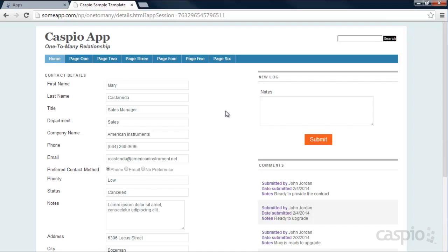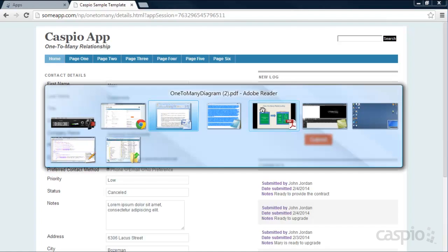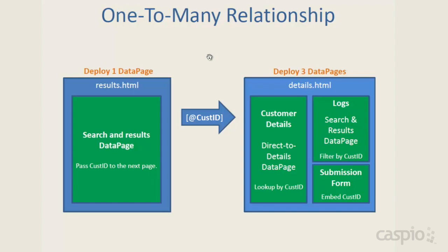Before I show you how this workflow is created inside Caspio, I have a diagram that illustrates exactly what's taking place. What we're going to need is two web pages — a results.html page and a details.html page. For this application to function we're also going to need four data pages: one data page deployed on the results page and three data pages deployed on the details page.